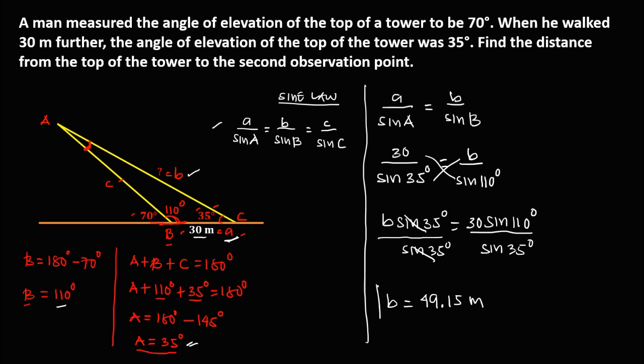So 49.15 meters is the distance from the top of the tower to the second observation point.